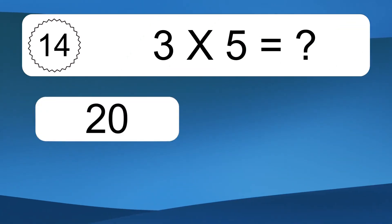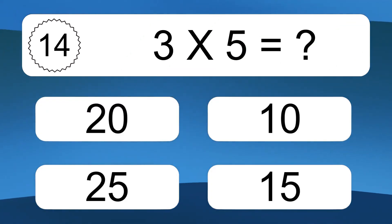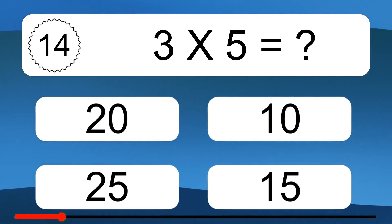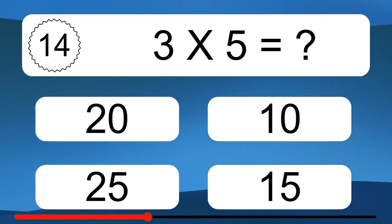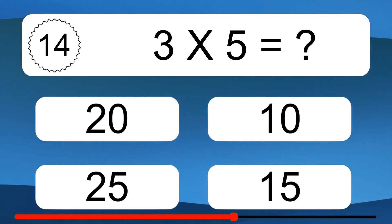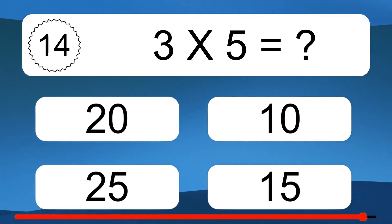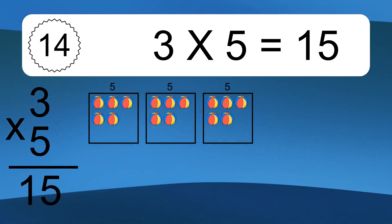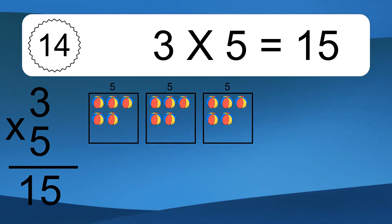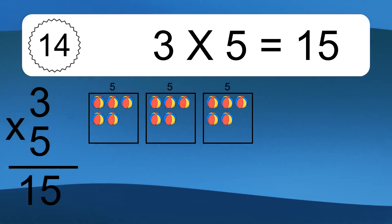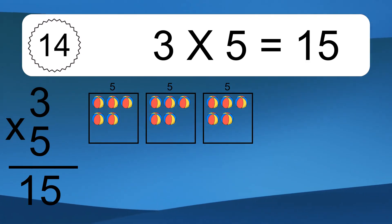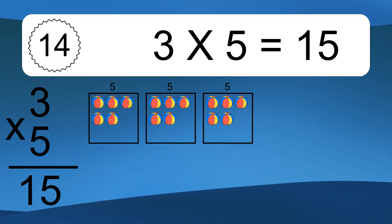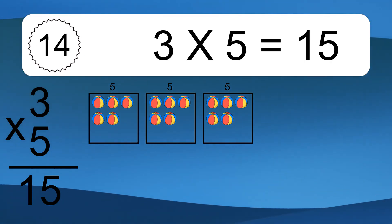3 times 5 equals what? 3 times 5 equals 15. We have 3 boxes, and each box has 5 colorful balls inside. If you count all the balls in all the boxes together, you will have 3 times 5 balls. This equals 15 balls.